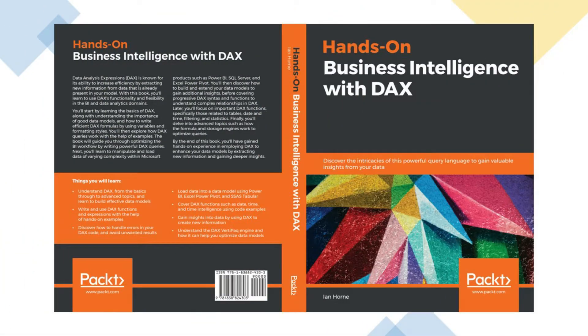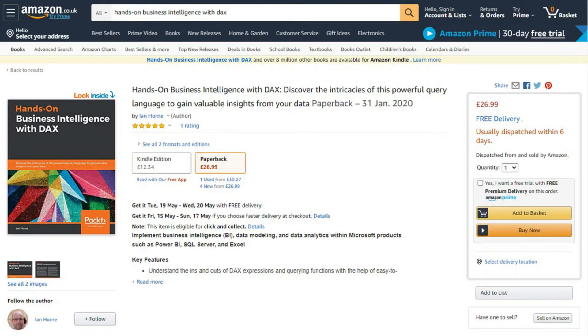In the last episode I gave a brief introduction to my new book, Hands On Business Intelligence with DAX, and I said I'd be using it to accompany future episodes in this series. With that in mind I'm going to start with today's episode by taking a quick look at chapter 1 and seeing what we've already covered in previous episodes before moving on to anything that's left. If you'd like to get hold of a copy of my book to follow along with this series then it's available from Amazon in both Kindle format and as a printed book.